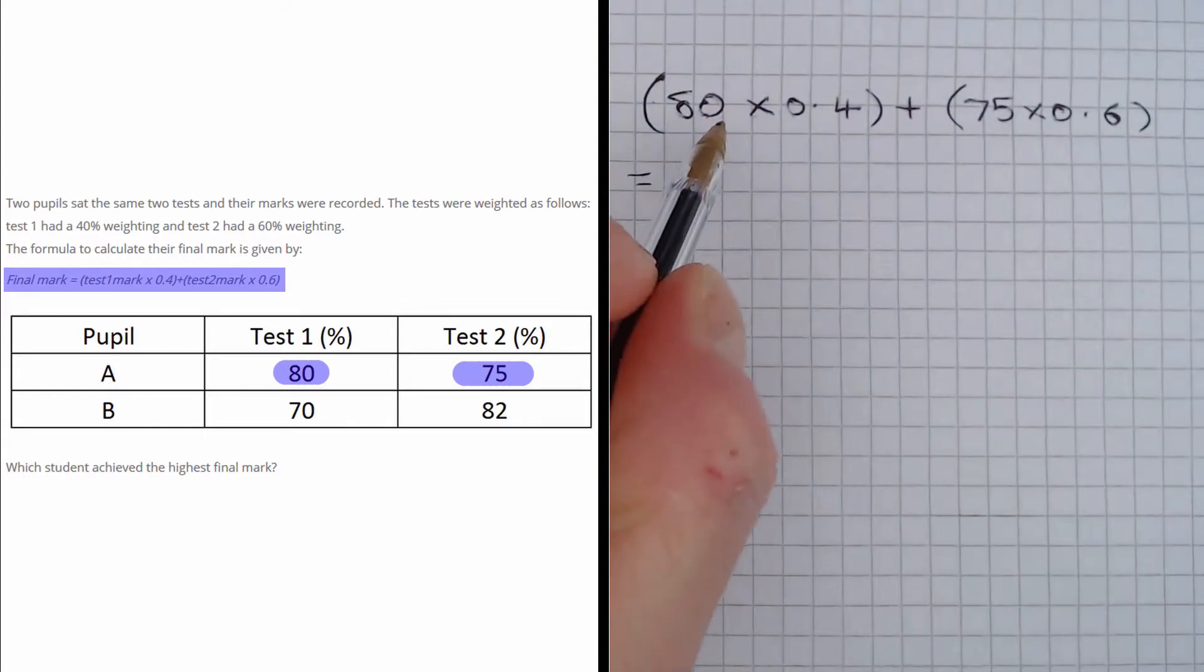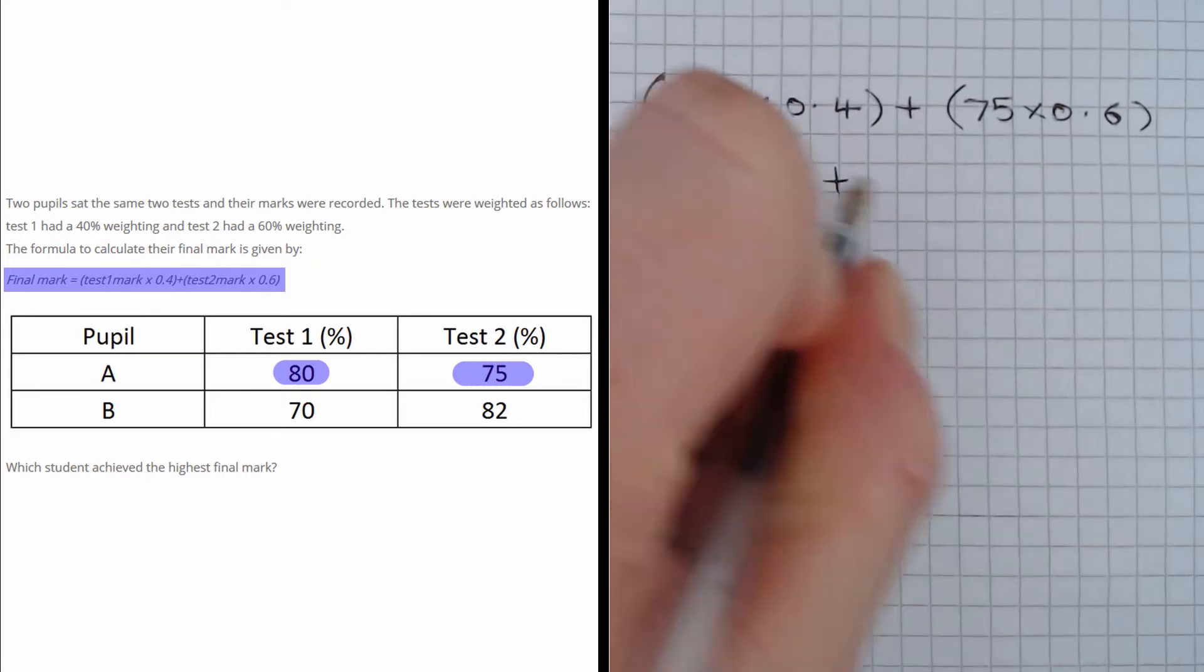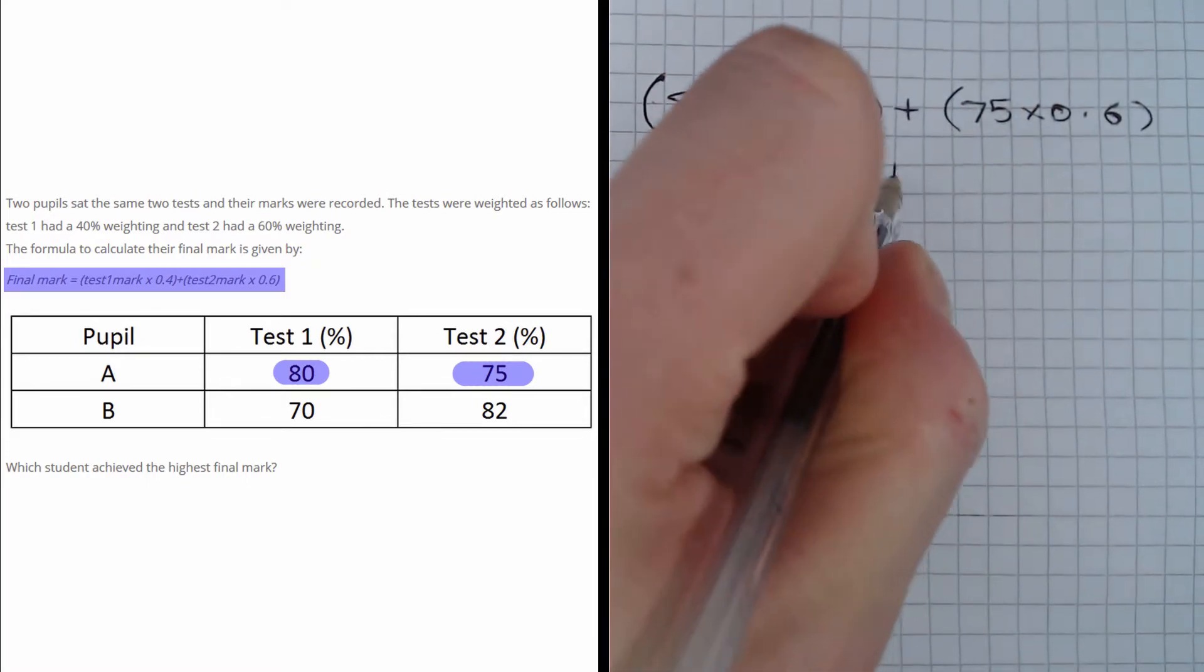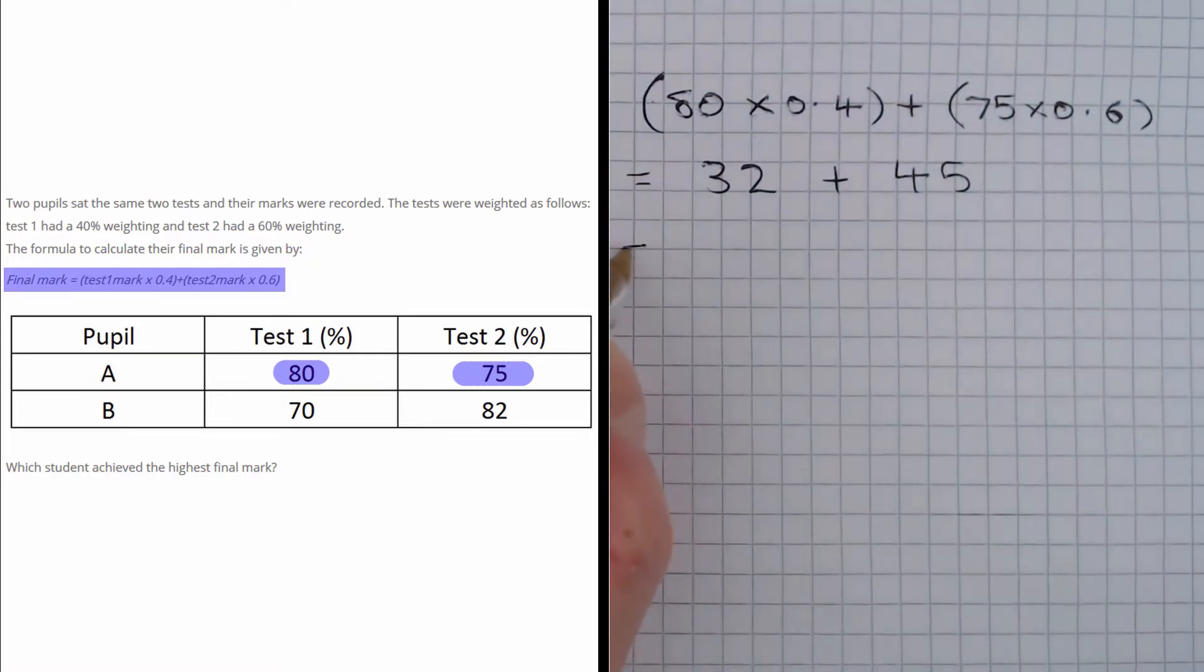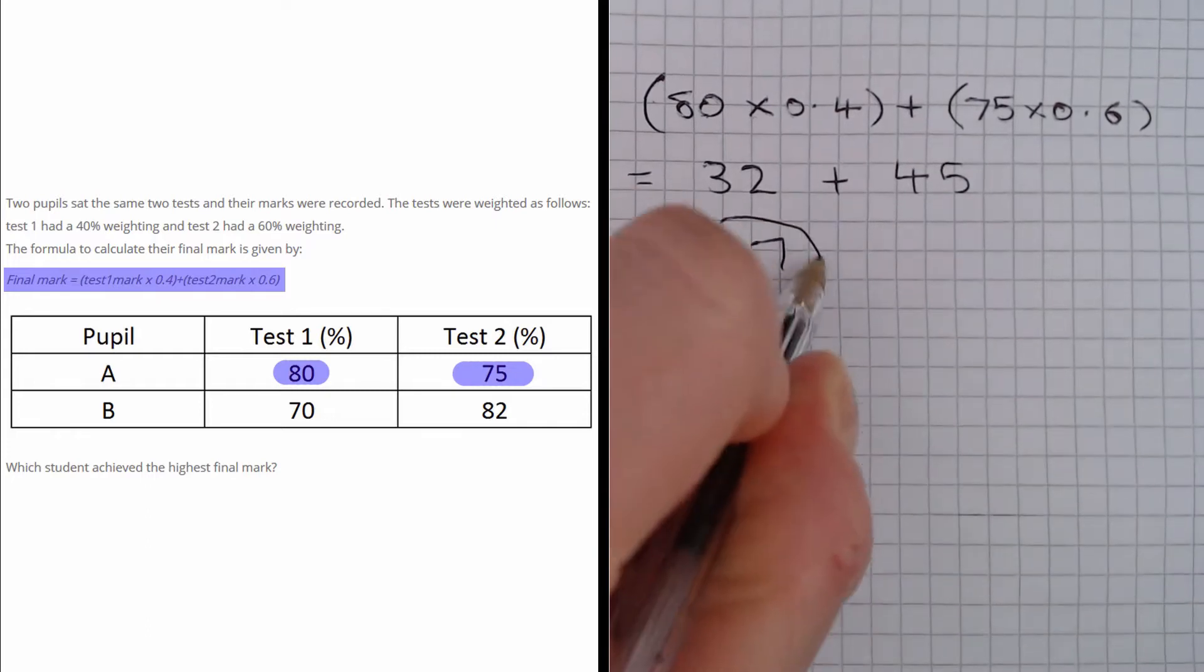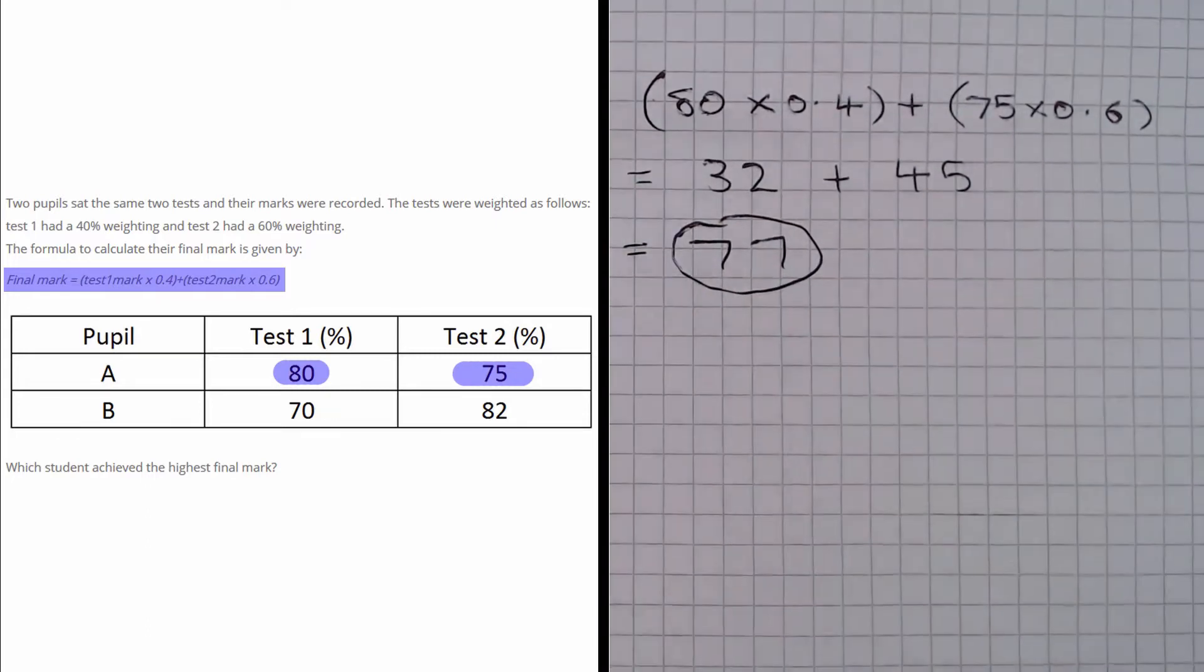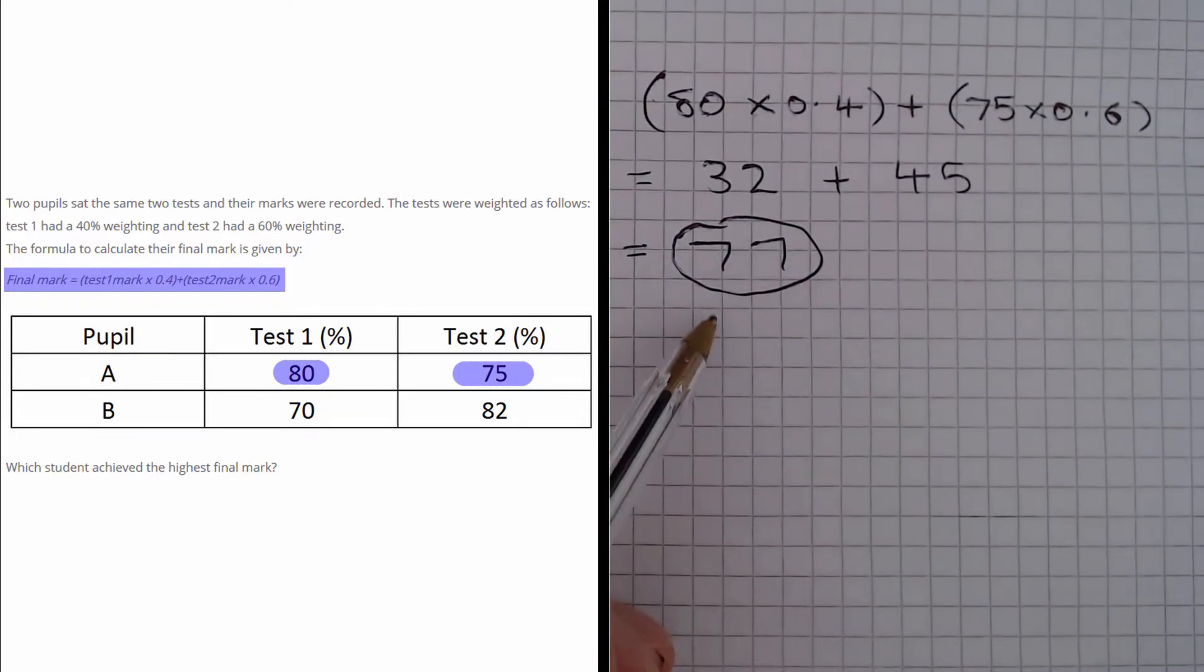This first bracket yields 32 and this second bracket yields 45. When we add the two together we get 77. So pupil A had a final mark of 77.